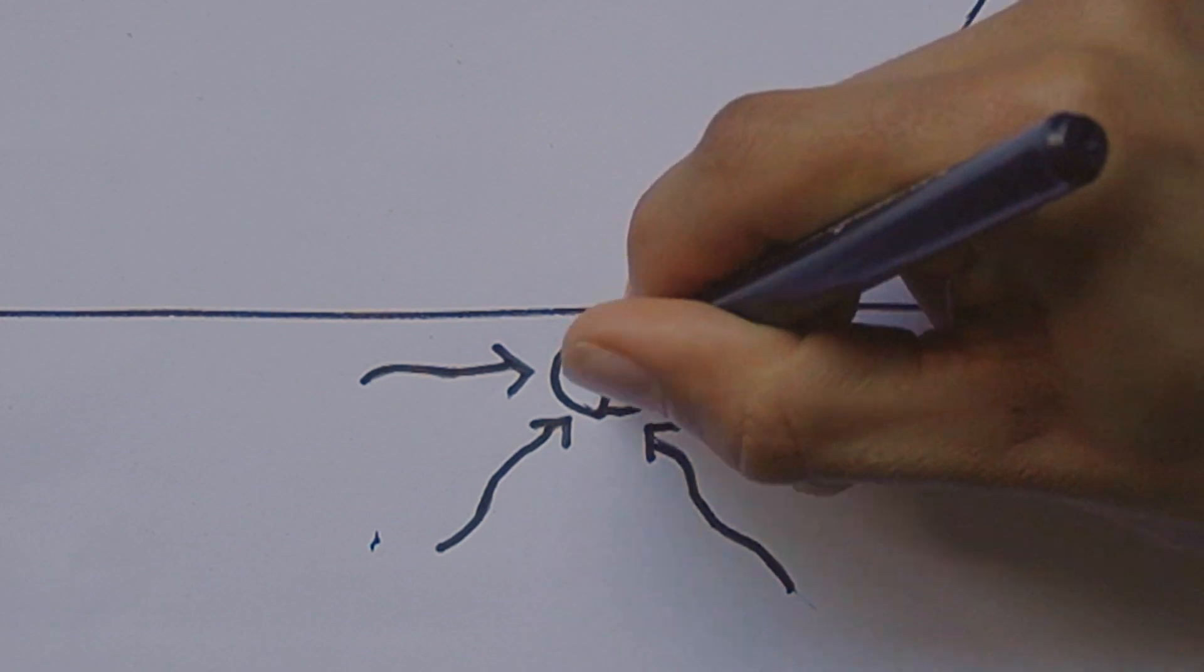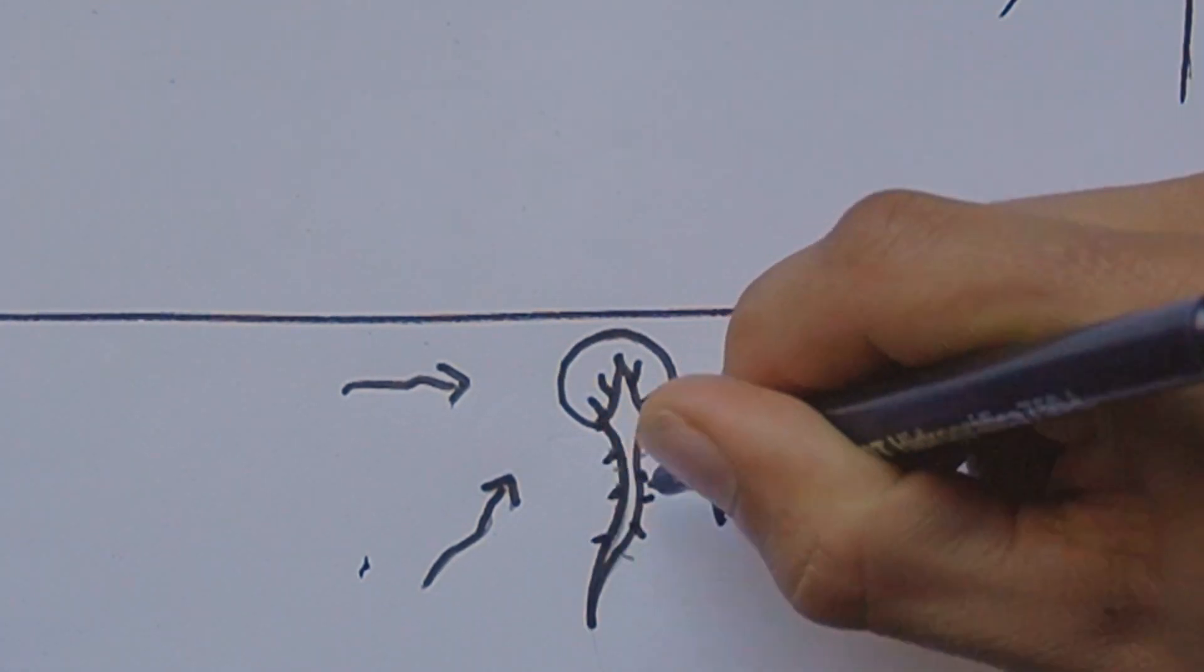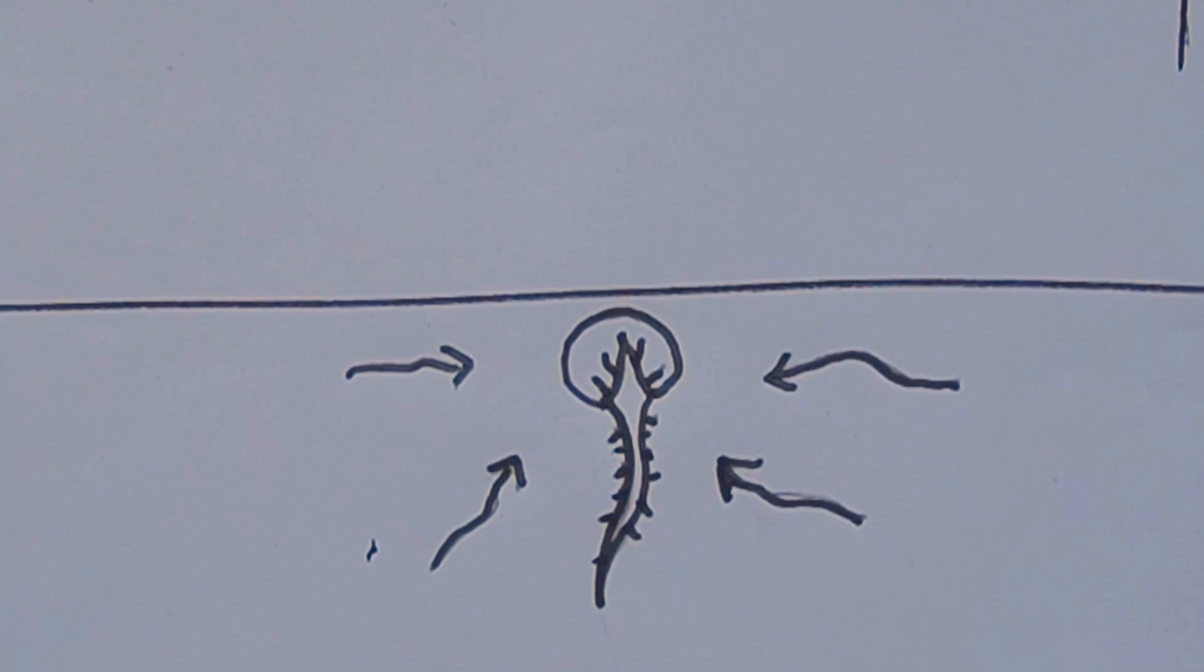The seed coat cracks, immediately sending down a root. Size and strength of this initial root is fully determined by the energy coming from that seed.